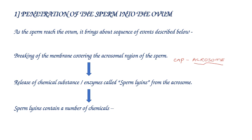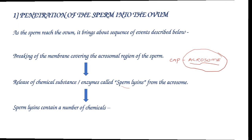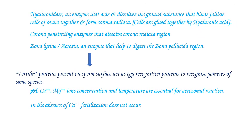During fertilization, the acrosome part of the sperm is most essential. The breaking of the membrane over the acrosomal region releases the sperm lysins — enzymes present in the acrosome. These sperm lysins contain two chemicals: hyaluronidase and acrosin.